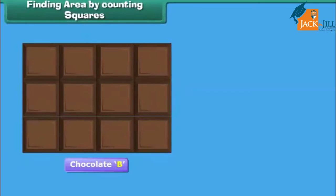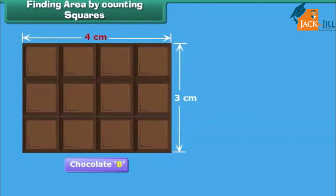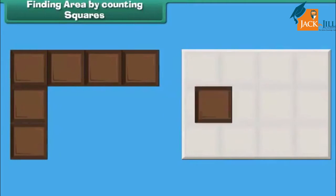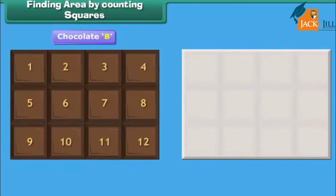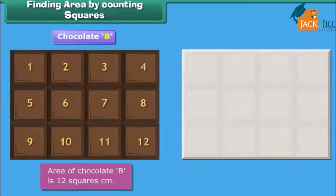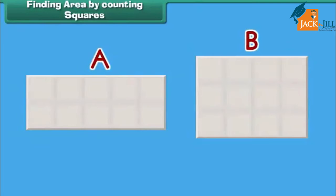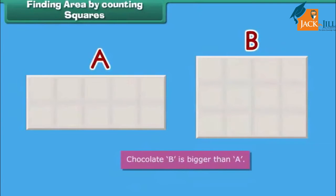Now let us find the area of chocolate B. The length of chocolate B is four centimeters and its width is three centimeters. So four squares can be arranged along its length and three squares along its width. In total, twelve squares can be arranged on this chocolate. Its area is twelve square centimeters. So among chocolates A and B, chocolate B is bigger in size.